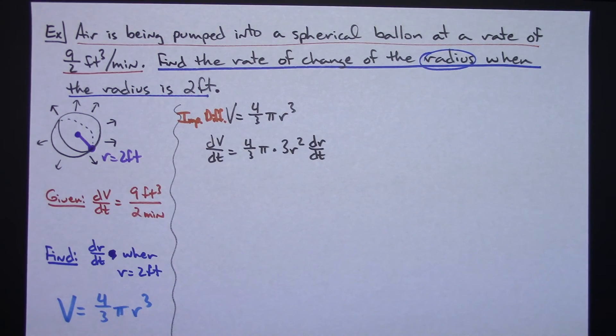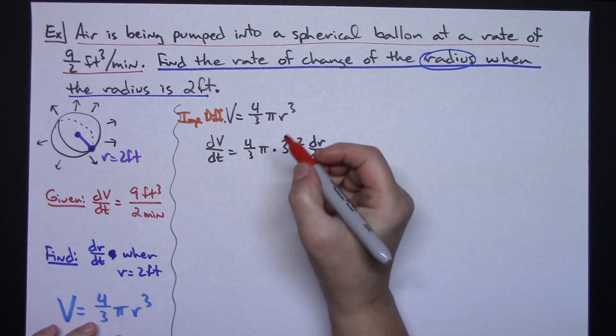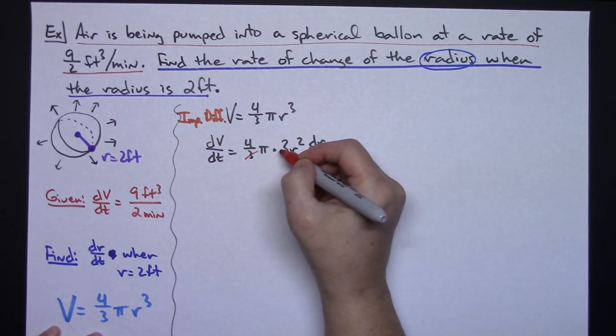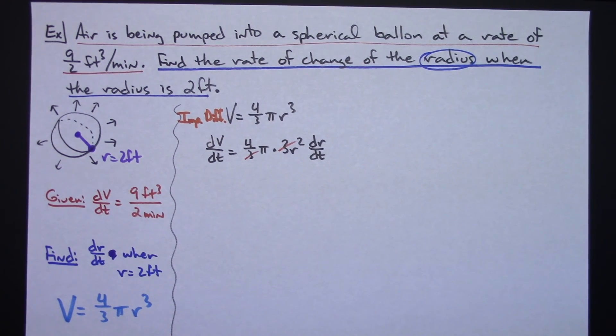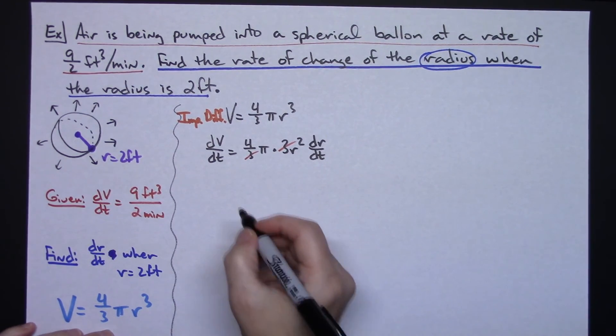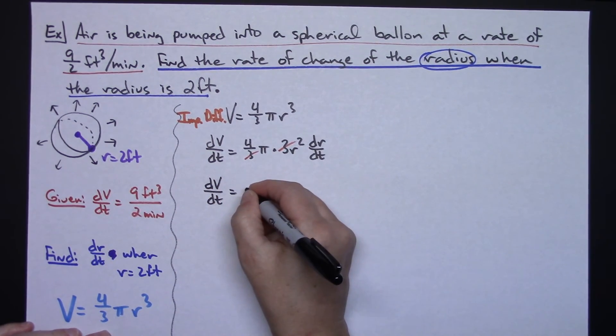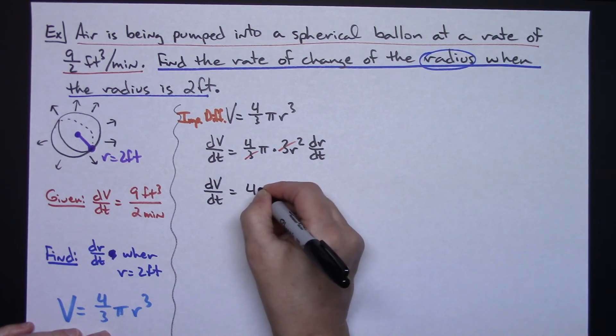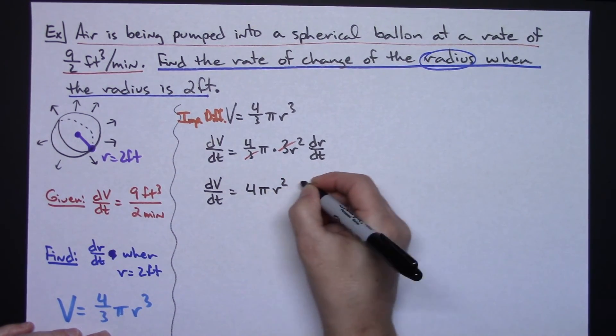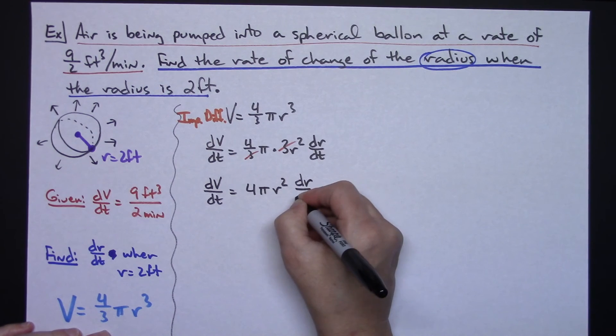Now generally at this point I'm going to do some simplifying and try to clean this equation up a little bit. Three on the bottom here and three on the top is going to cancel out. So that's going to clean my equation up a little bit here with dV/dt is equal to 4π r² dr/dt.